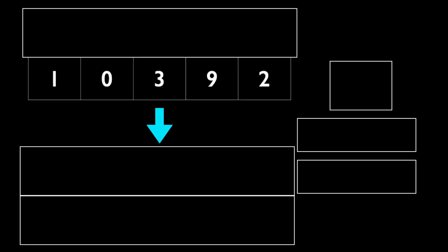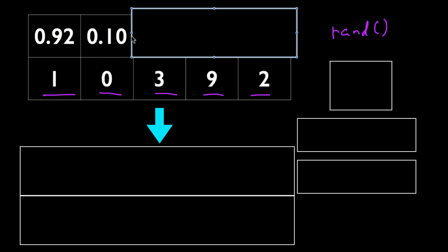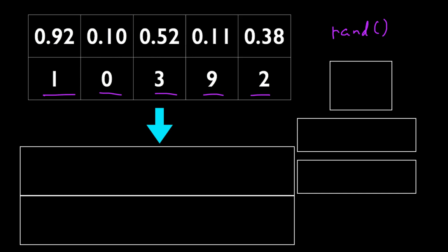Here's one potential solution to this problem. We're going to use the rand function to generate a random value for each item that we have in the array. So for example, we're going to generate 0.92 randomly for the value 1, and 0.10 for the item 0. After that, using those randomly generated values as keys, we're going to sort this array in ascending order. So in this particular example, the value 0 will come to the top of the array because the corresponding random value is the smallest among all the random values that we generated.